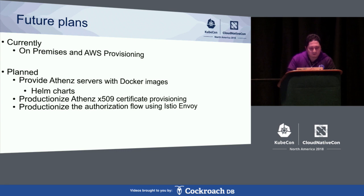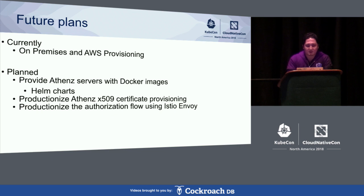For future plans, Athens already supports providing Amazon Machine Images. To support Athens on Kubernetes more easily, we're working on Docker images for servers and also Helm charts. We're also working on productionizing components to support Istio's original mutual TLS authentication. These features will productionize Athens' X509 certificate provisioning and authorization flow using Istio Envoy.